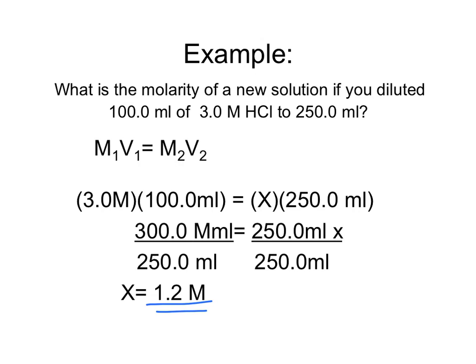That should make sense. Our original concentration was 3 molar, and we are diluting 100 milliliters of it to 250 milliliters, so we added 150 milliliters of water, which caused it to lower in concentration to 1.2 molar. This concludes our section on concentration. Hopefully you'll do some more practice with the molarity calculation and the dilutions calculation. See you in class.